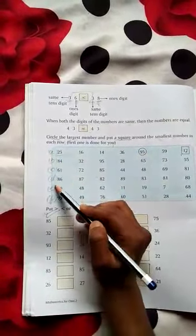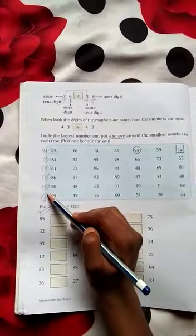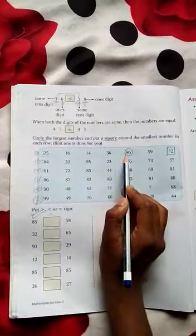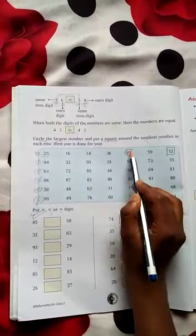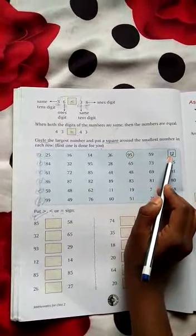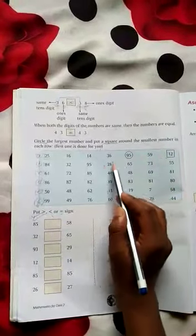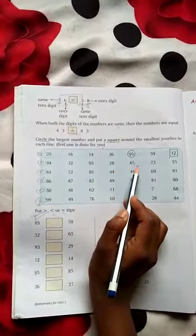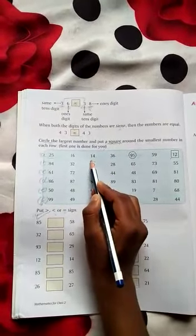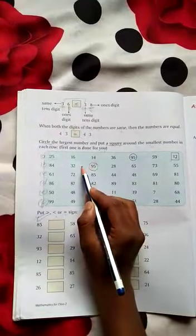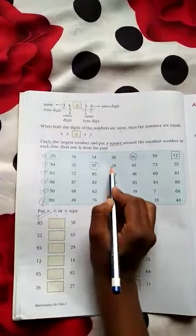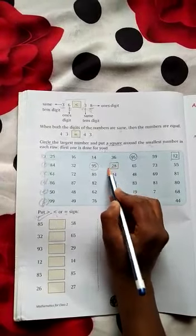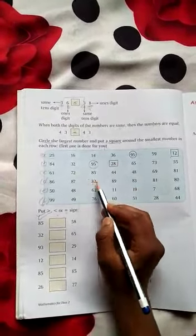In each row, who is the biggest number? 95. What do we need to do? Circle it. The smallest number is 12. What do we need to do? Square. The smallest number is 28. What do we need to do? Square. And the rest of us will practice ourselves.